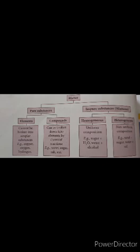These pure substances are further classified into two types: elements and compounds. All the substances on the earth are made up of certain simple substances called elements. Everything — plants, rocks, even our body — contains elements.